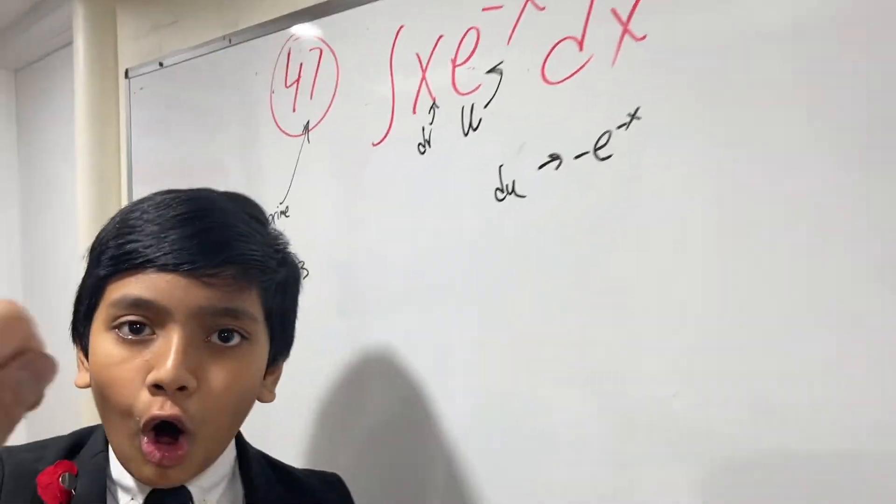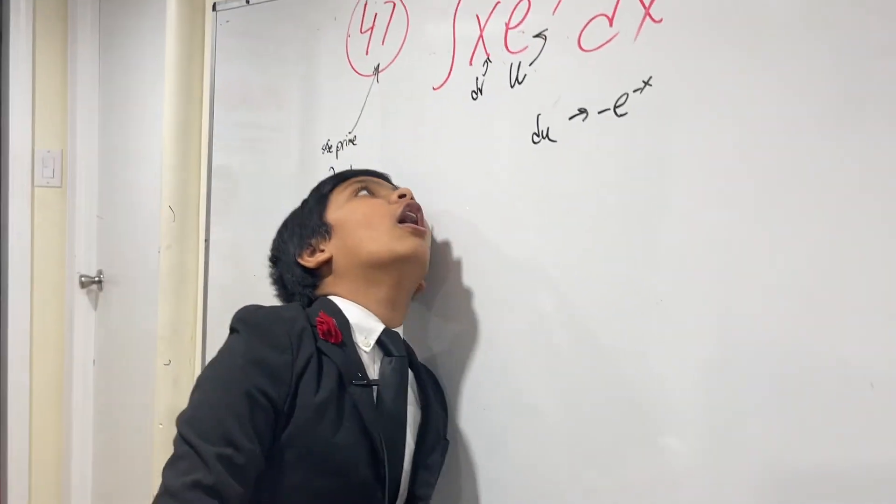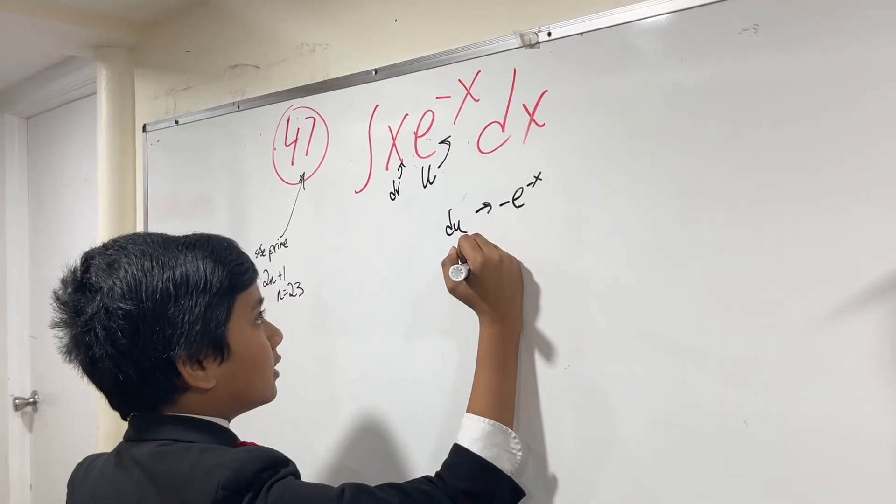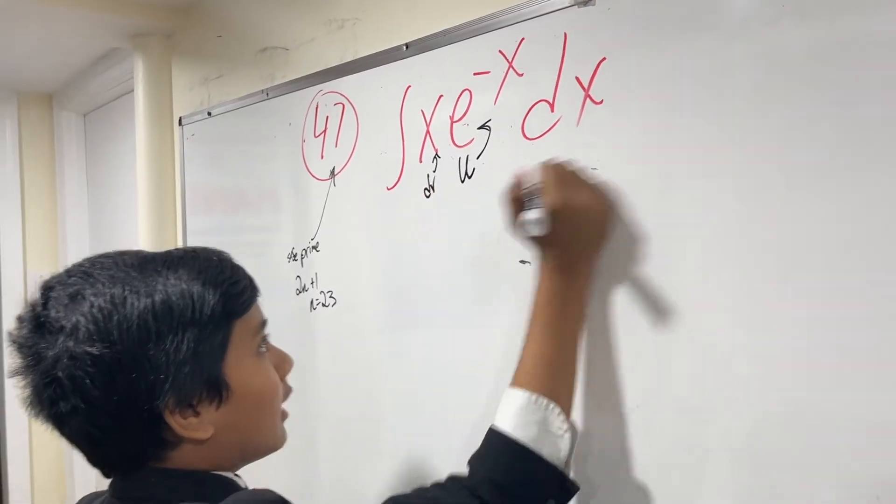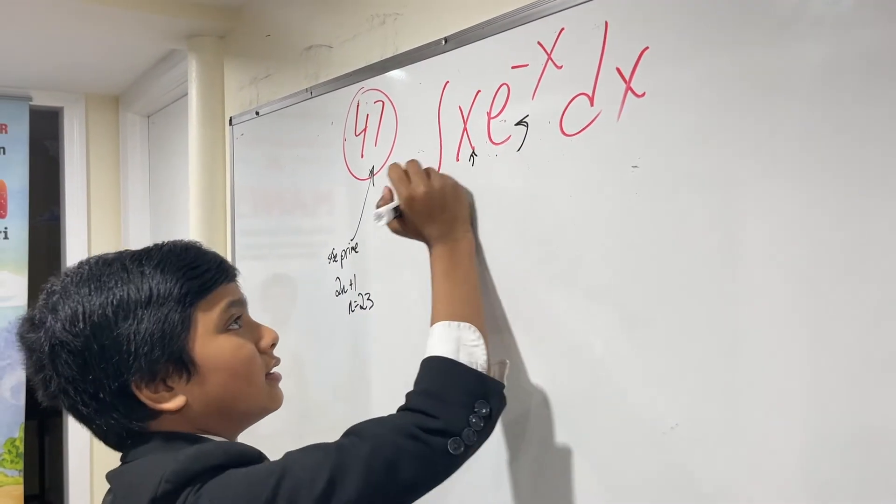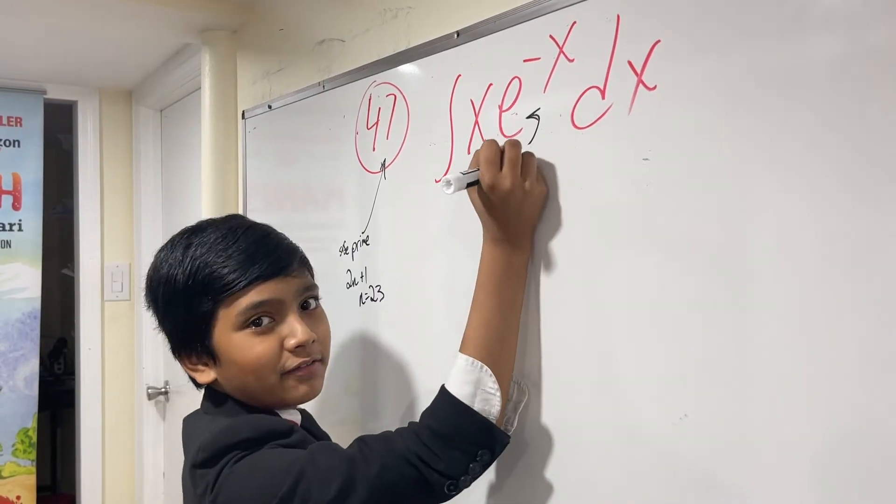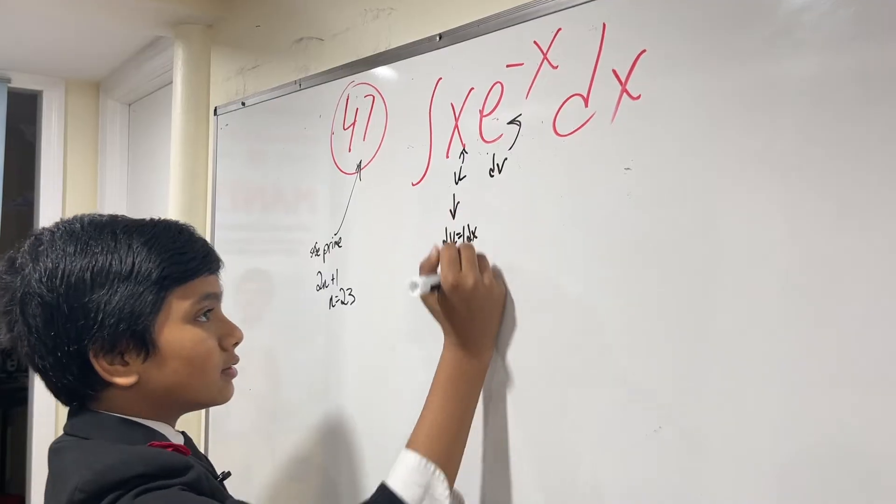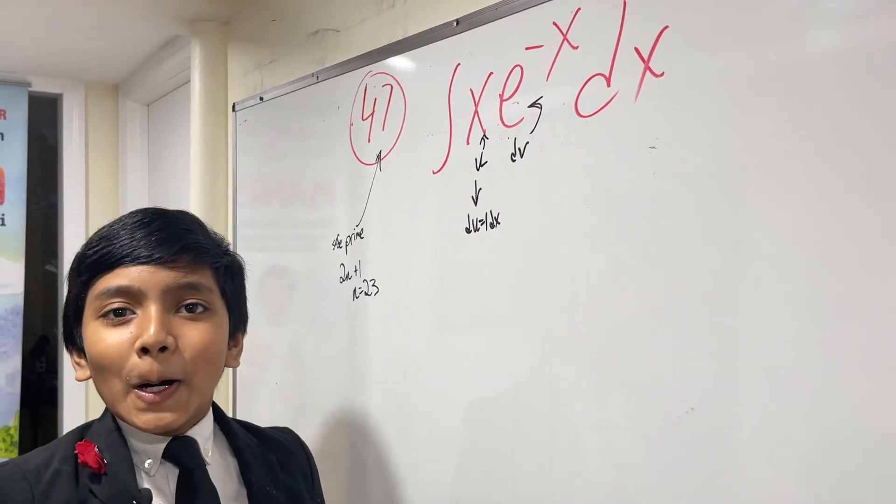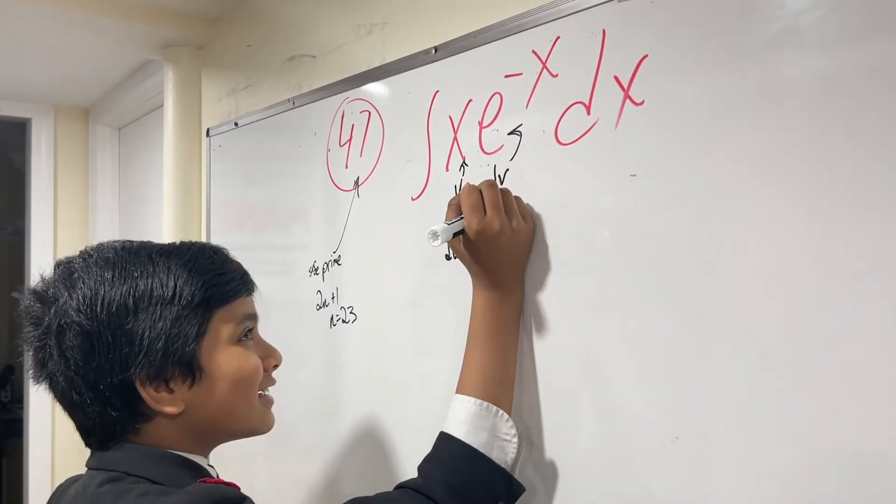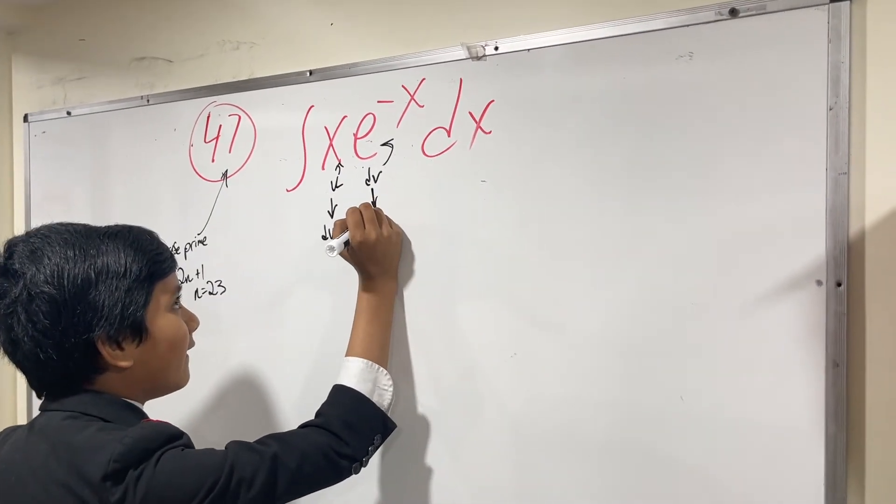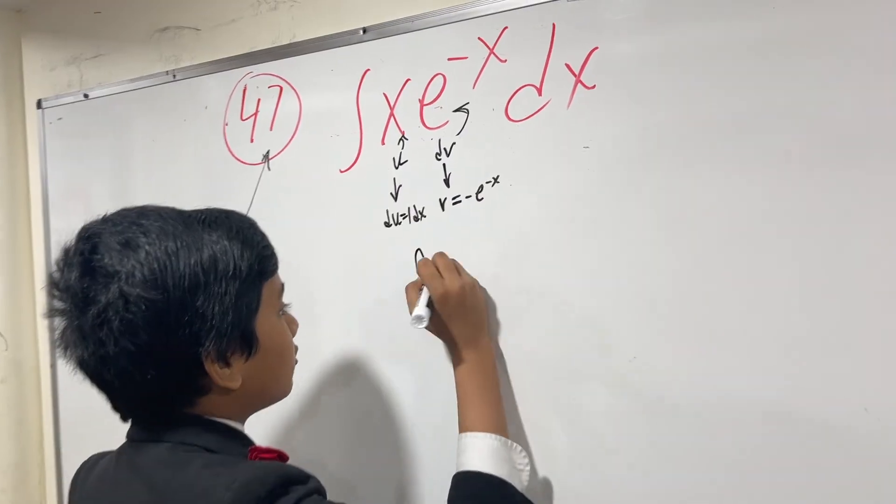Wait, I've got a better idea. Why don't we make x equal to u and e^(-x)dx equal to dv? That way du is just dx. Okay, dv is e^(-x)dx.